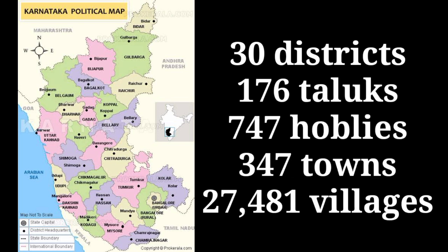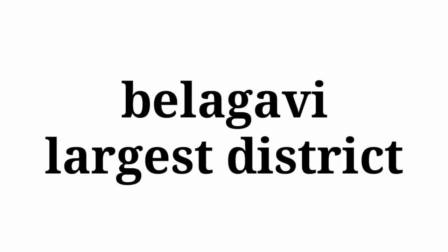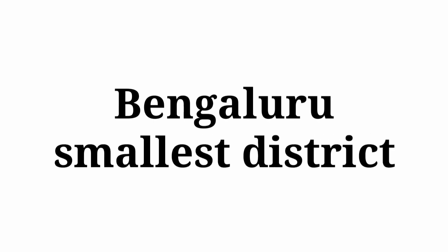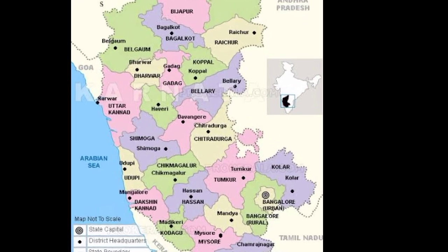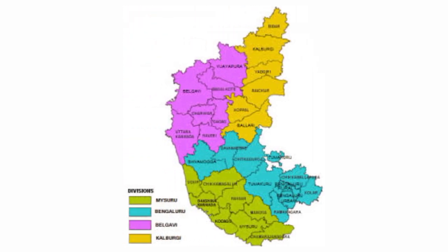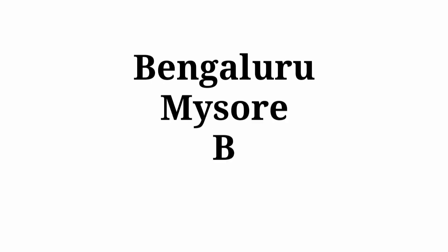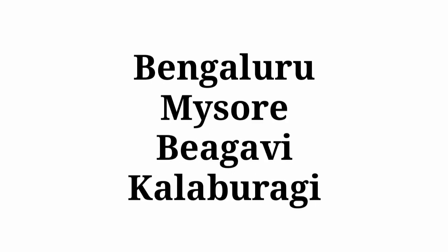At present, there are 30 districts in our state, 176 taluks, 747 hoblis, 347 towns, and 27,481 villages. Belgavi district is the largest district in size and Bengaluru Urban district is the smallest district. Bengaluru is the capital of Karnataka. Our state has been divided into four parts for the purpose of administrative system: Bengaluru, Mysore, Belgavi, and Kalaburgi.